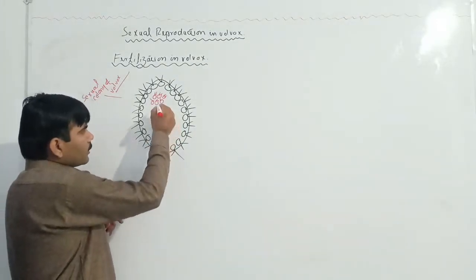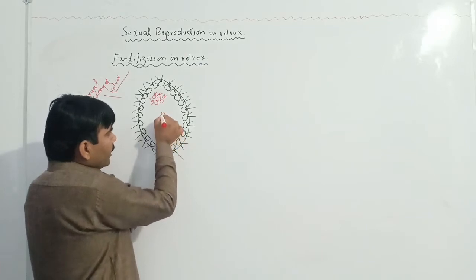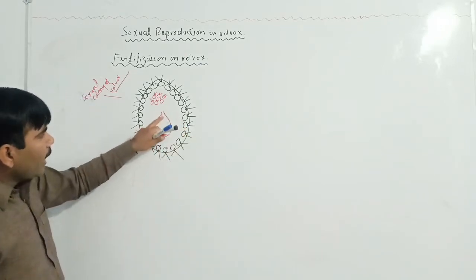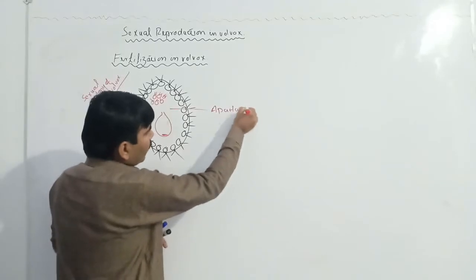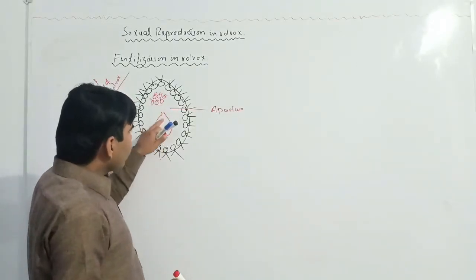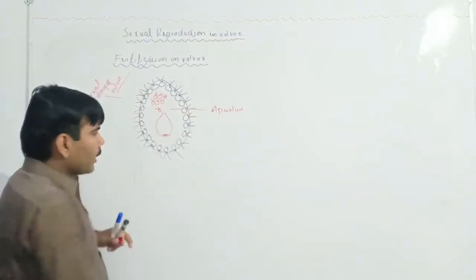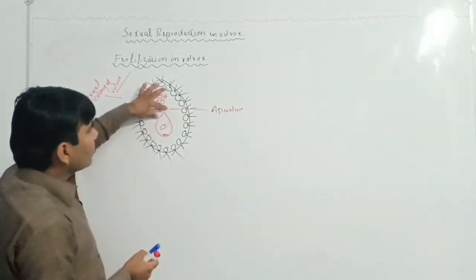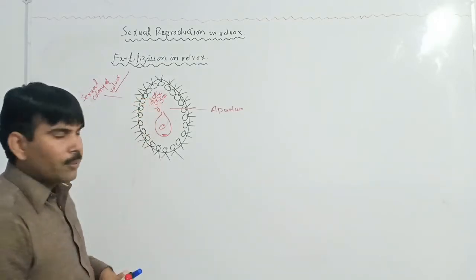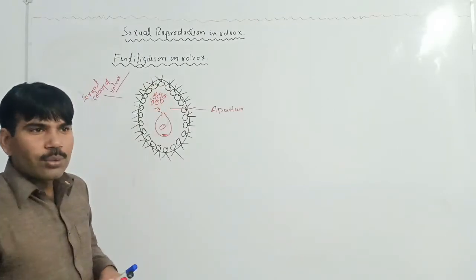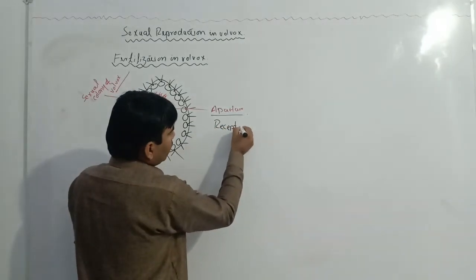The oogonium has two ends: one is a broader end and the other is a tapered end. At the tapered end there is an aperture, an opening. The antherozyte can enter into the oogonium through this opening. This aperture is known as the receptive spot.